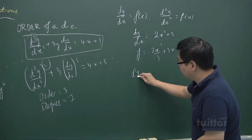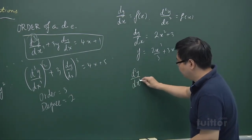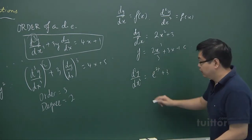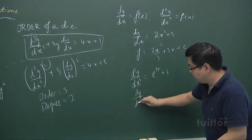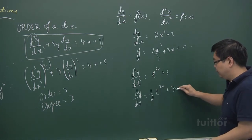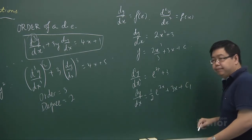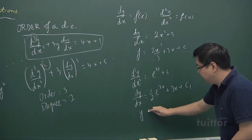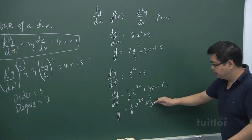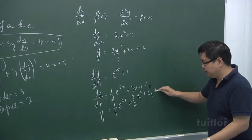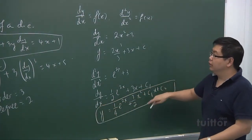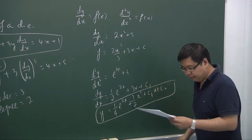Another example: if d²y/dx² equals e^(2x) plus 3, you integrate once to get dy/dx equals ½e^(2x) plus 3x plus c₁. And integrating one more time, you get y equals ¼e^(2x) plus (3/2)x² plus c₁x plus c₂. So this will be the solution to this differential equation. That's one method.